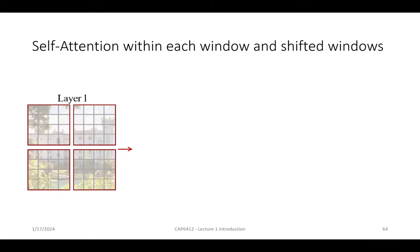Visually, in the first block we have a 4x4 window. In the shifted block, the window shifts by half — so the 4x4 window is now positioned differently. This shifted window idea is key to allowing cross-window connections across the image, hence the name 'Swin' (Shifted WINdow Transformer).